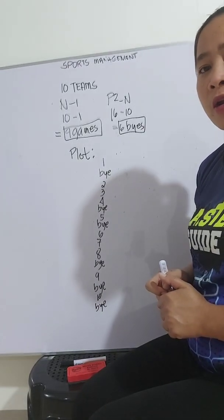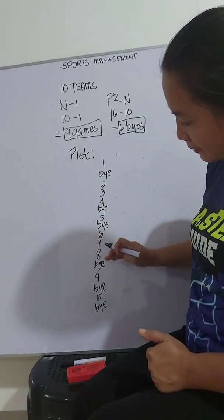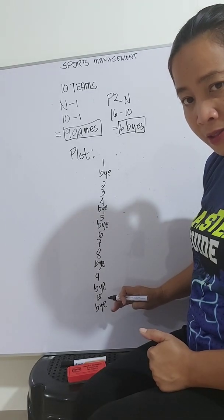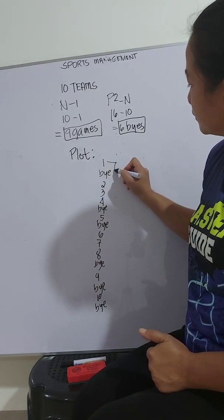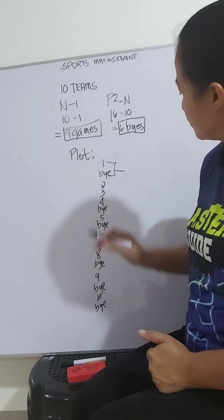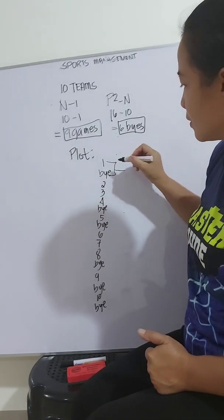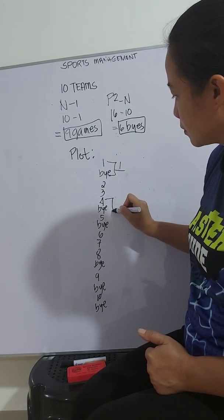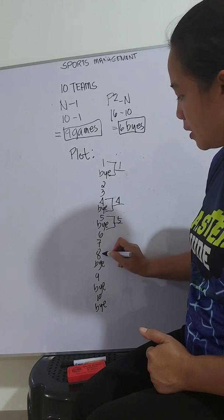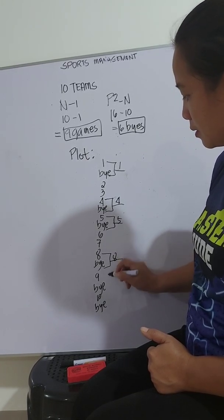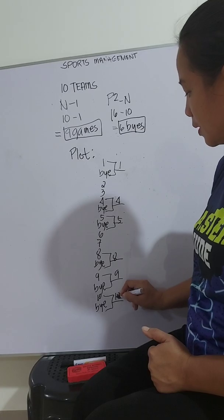Now let's proceed to our bracketing. Although 1, 4, 5, 8, 9, and 10 are byes, then we should close the bracket. This is to consider that they're moving to the next round. 1, 4, 5, 6, 7, 8, 9, 10.